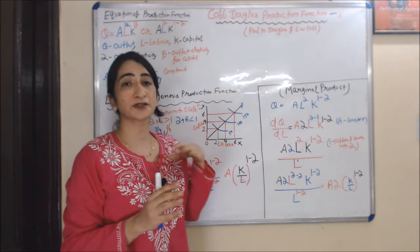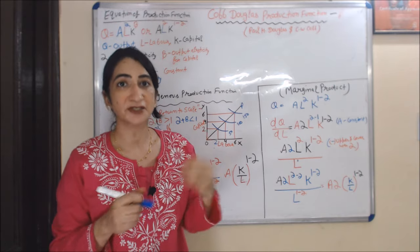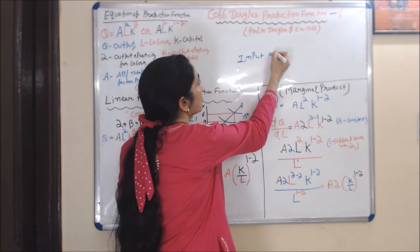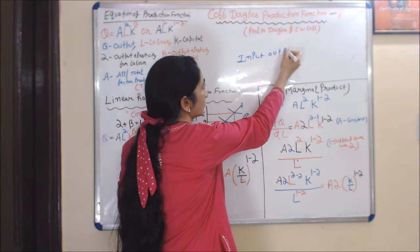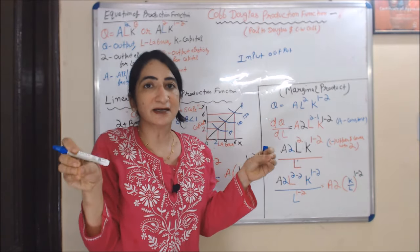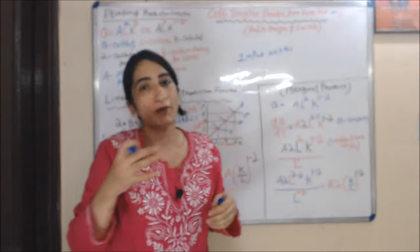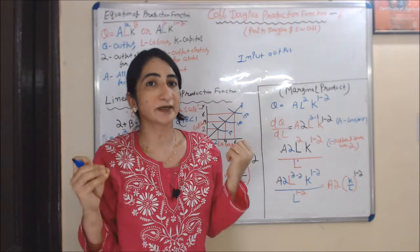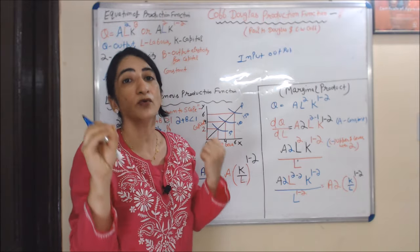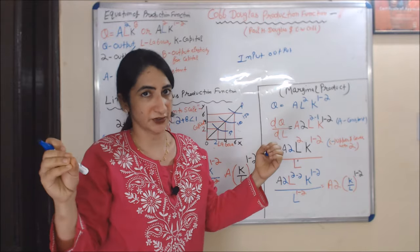This production function basically describes the technical relationship between the amount of input and the amount of output. Most importantly, this production function takes only two inputs — labor and capital — for whole production.